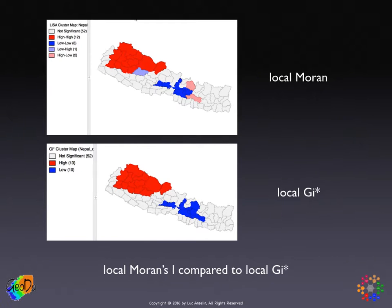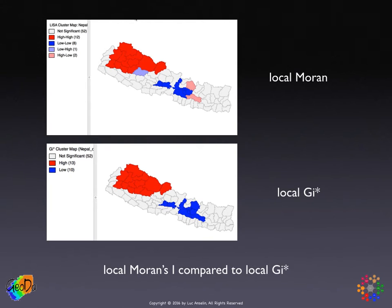Continuing with our Nepal life expectancy example, we see the local Moran cluster map on top and the local GI star cluster map on the bottom. They essentially identify the same locations as significant. However, in the local GI star, one of the spatial outliers — the low-high spatial outlier — is included in the hot spot high-high cluster. Conversely, the high-low spatial outliers are included in the cold spot cluster. So these are basically very similar approaches. The main difference is that the local Moran is attuned to spatial outliers, while the local GI and GI star statistics are not, focusing exclusively on hot spots and cold spots.